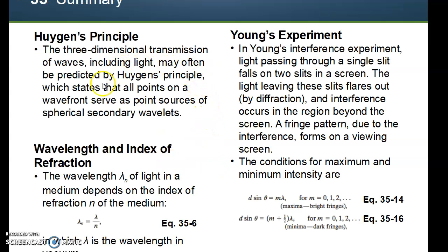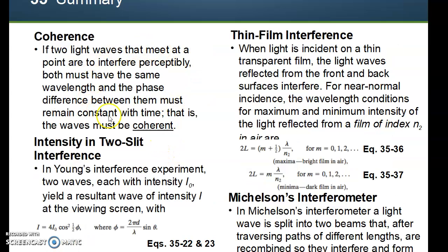To summarize this chapter, we have the Huygens Principle that we talked about. We talked about the wavelengths and index of refraction for what the new wavelength is after it goes through something other than air. Young's experiment for the conditions for the maximum and the conditions for the minimum in the fringes. We have the coherence, what it means to be coherent, in terms of light, not in terms of when I'm speaking. Intensity and two-slit interferences. And this is the equation that was cut off on one other slide. But as you can see, these are equations 35-22 and 23.